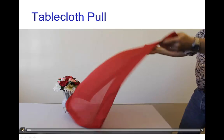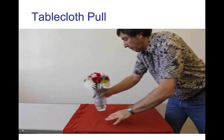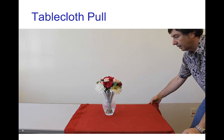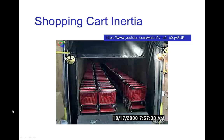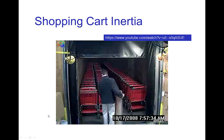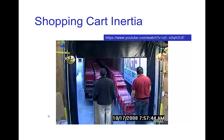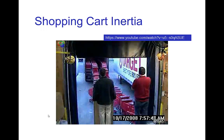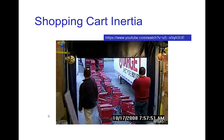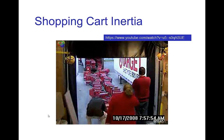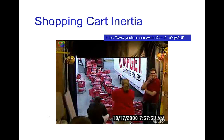Let's look at a quick video of that. Here's another similar example, only instead of a vase, we have shopping carts, and instead of a tablecloth, we have a truck that the shopping carts are sitting on top of. These shopping carts have been loaded in the back of this truck, and now the truck leaves the store. Because of the inertia of the shopping carts, they stay in place — the row on the right-hand side stays in its original position as the truck moves out from under them.